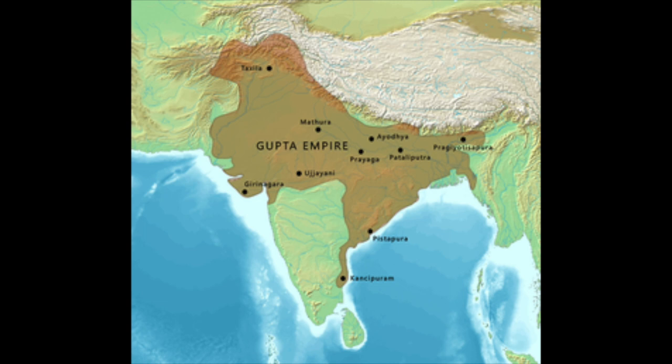After his death in 335, his son Samudragupta took over. He was a brilliant tactician and military genius, and was responsible for the empire's greatest increase in territorial size. When he took power, the Guptas only controlled the areas around the Ganges River. By the time of his death, their dominion had spread across northwestern India and vast portions of India's east coast.